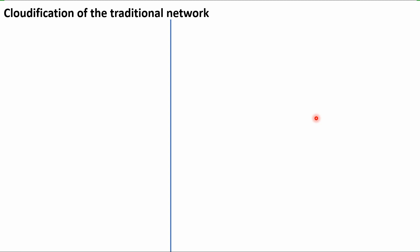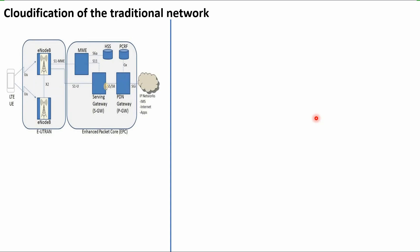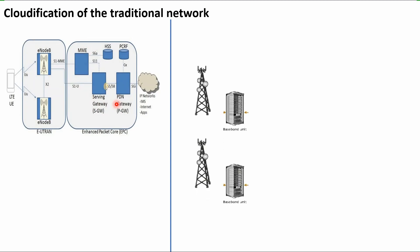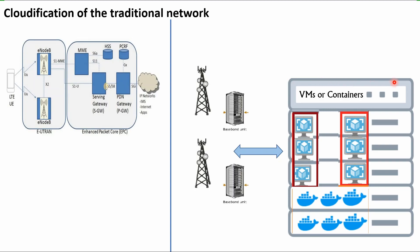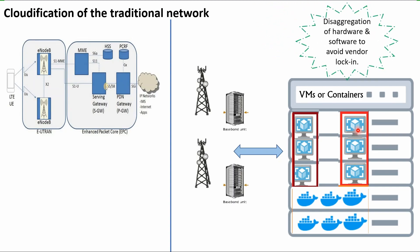To combat this lock-in, cloudification of the traditional network has been done by almost all major operators. The cloudification has been done mainly for the core network part — the RAN remains the same. The core network now looks like a cloud rack with hundreds of COTS (commercially off-the-shelf) Linux servers, and on top of these servers, the applications are hosted as software images in the form of virtual machines or containers. This achieves a disaggregation of hardware and software to avoid vendor lock-in.